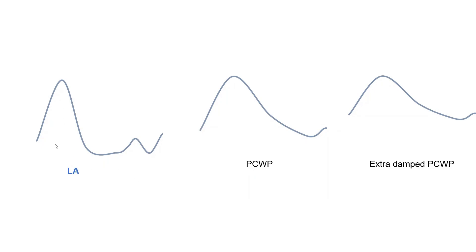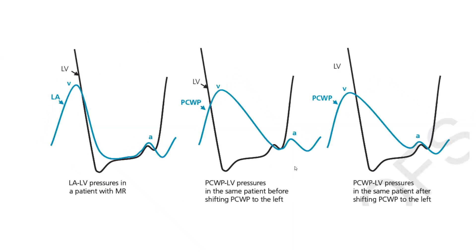LA pressure has clear A-wave and V-wave. Wedge pressure is a damped LA pressure — imagine taking LA pressure, stretching it out in both directions. The degree of damping can vary. The area under the curve is much different between wedge and LA pressure. The mean is generally the same, so wedge pressure is a good correlate of mean LA pressure and of pulmonary edema, but not of the exact LA pressure morphology — which is critically important.